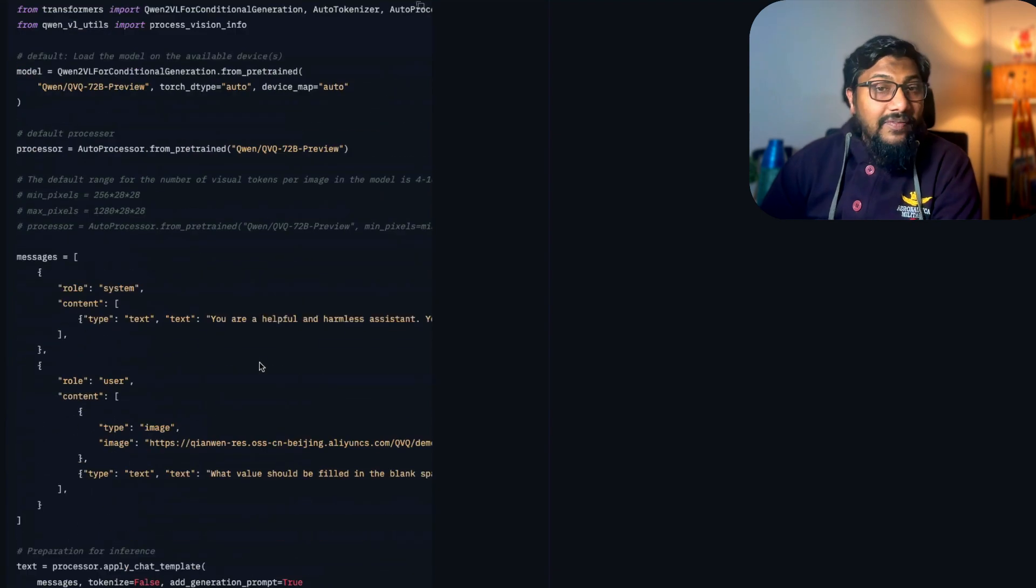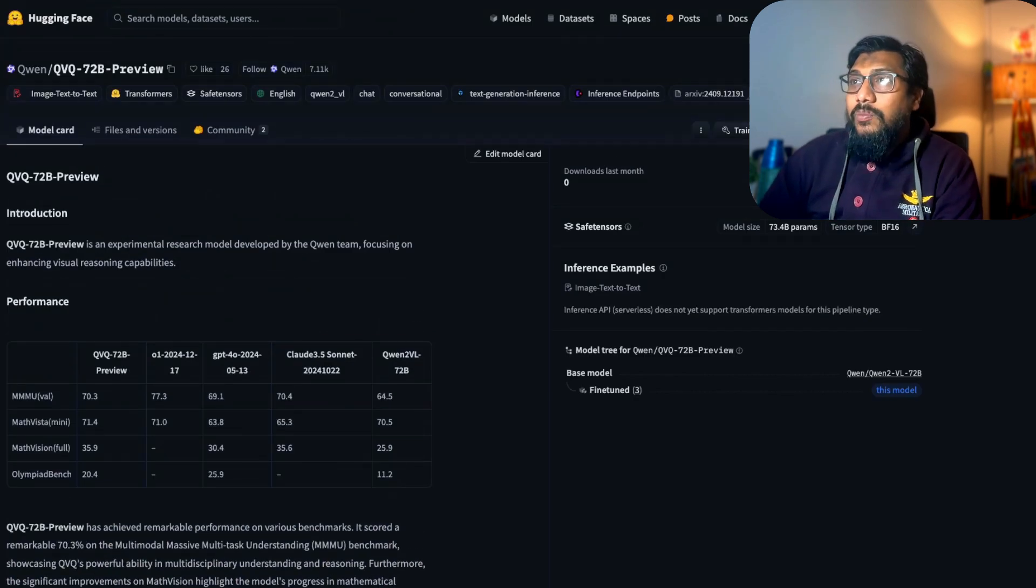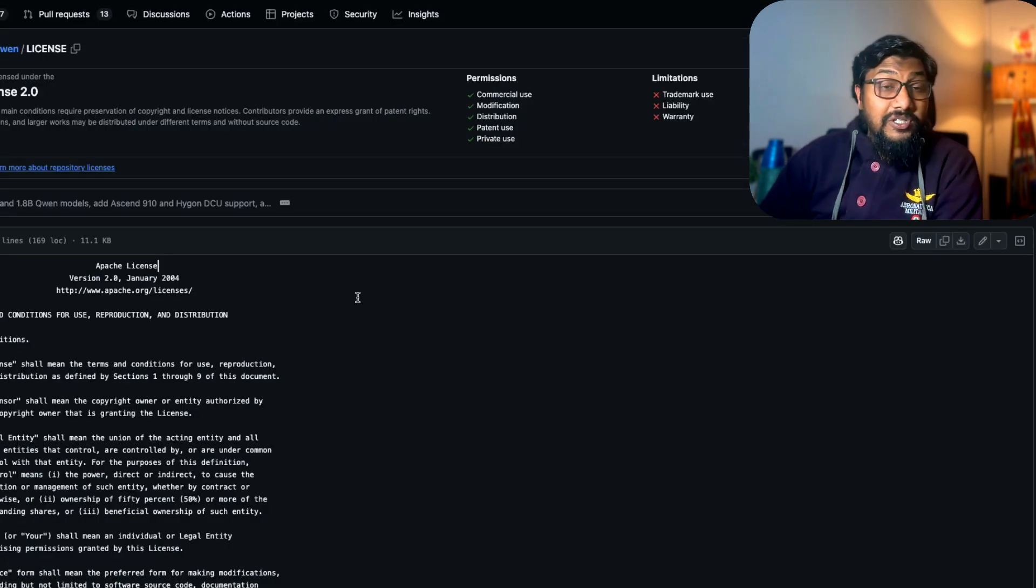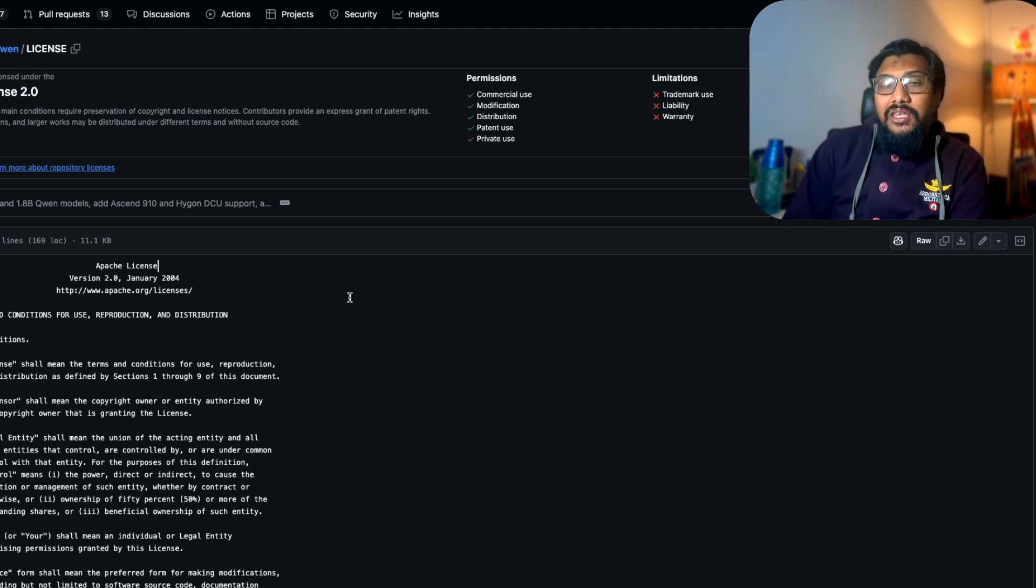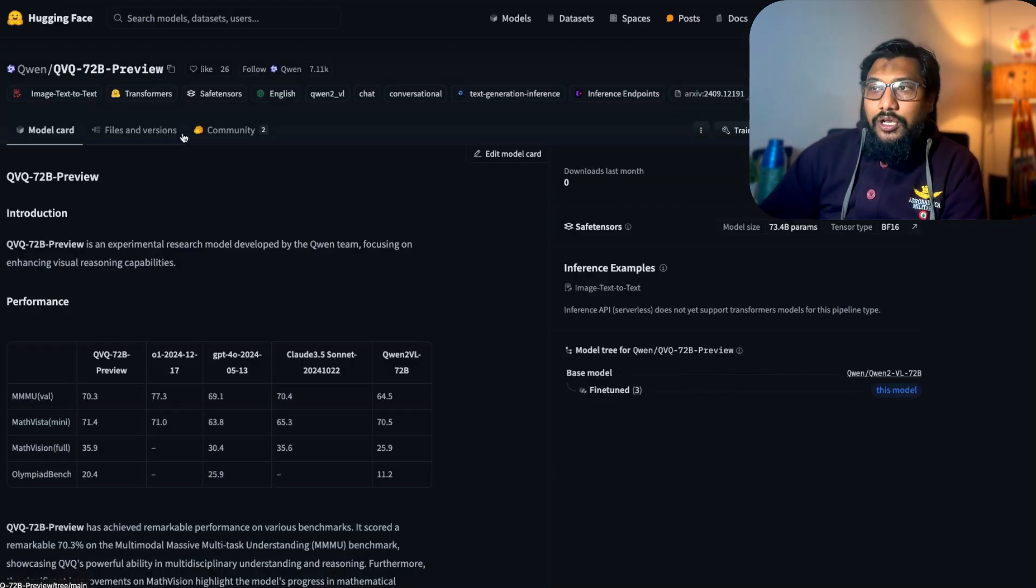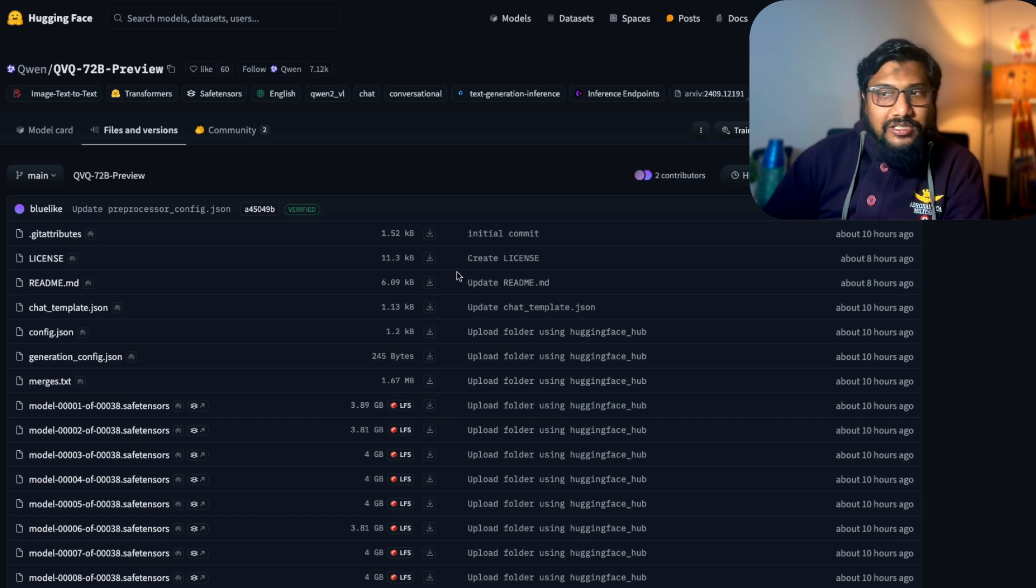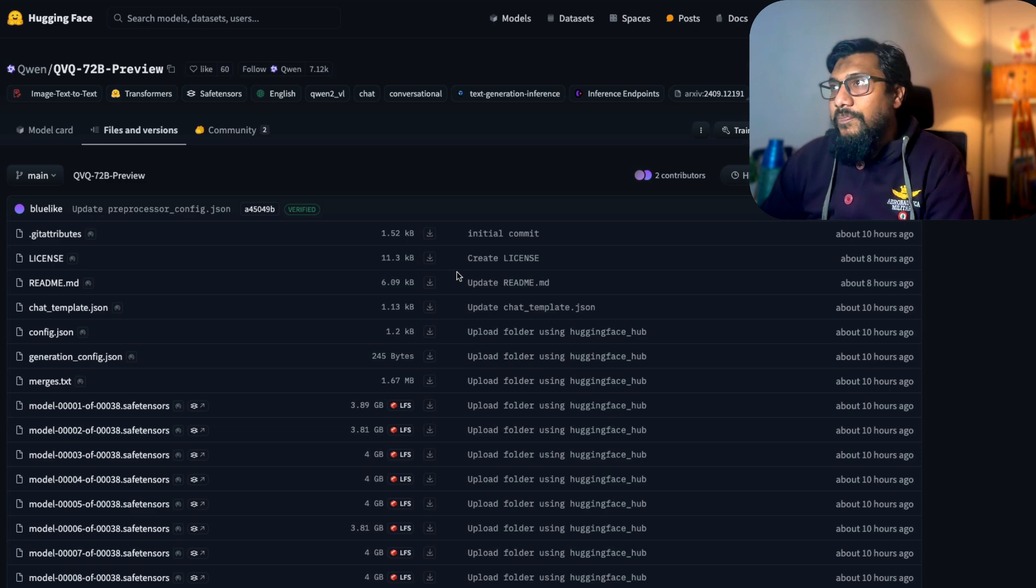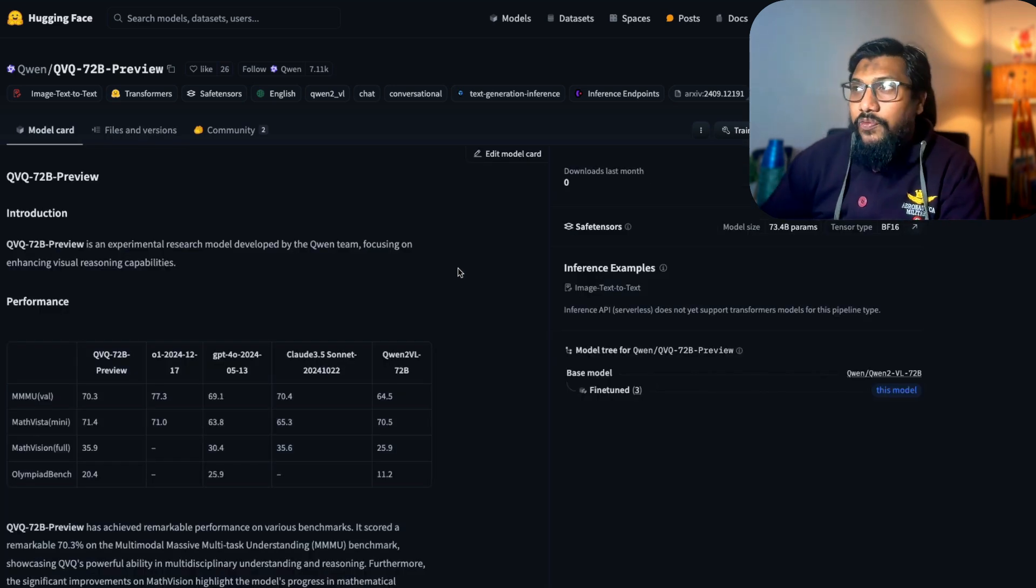The model comes with a permissive Apache 2.0 license, which is quite good given that this is the first thinking model probably coming with this license. Literally today, if you go to Hugging Face, you can just literally go download the model. There is no waiting list, no form for you to fill, none of those shenanigans. Just go there, download the model. The model is available now.